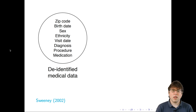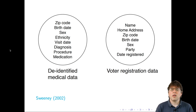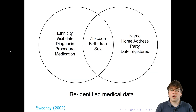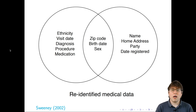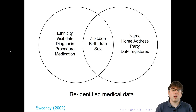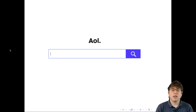In the previous lecture and in Bit by Bit, I showed Latanya Sweeney's research where she took de-identified medical data, merged it with voter registration data, and re-identified the medical data. Not all re-identification attacks happen in exactly that form. I want to give another example of a well-meaning researcher who tried to make data available and it was later re-identified — the AOL search log example.